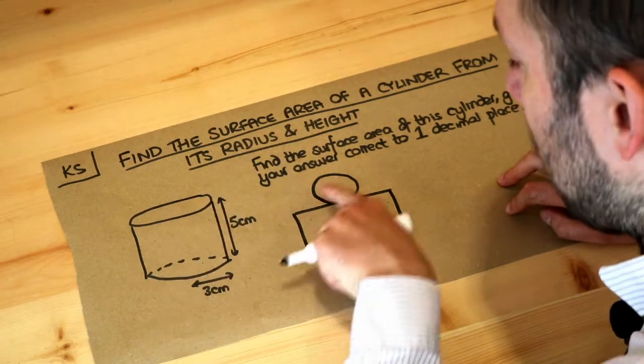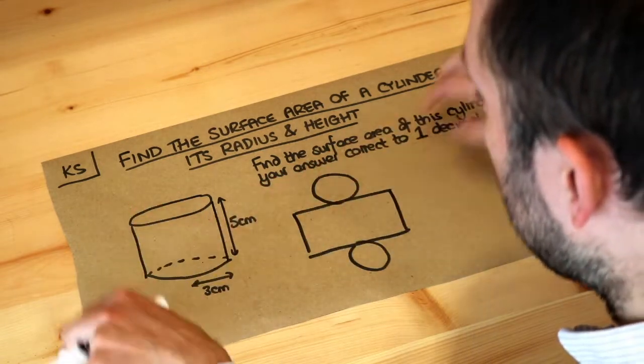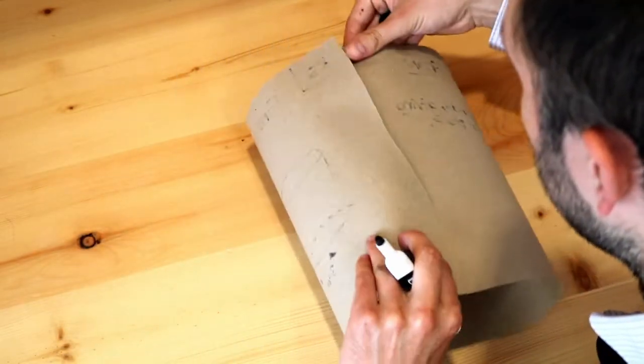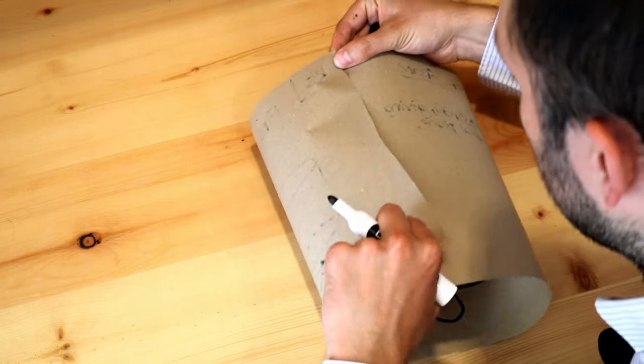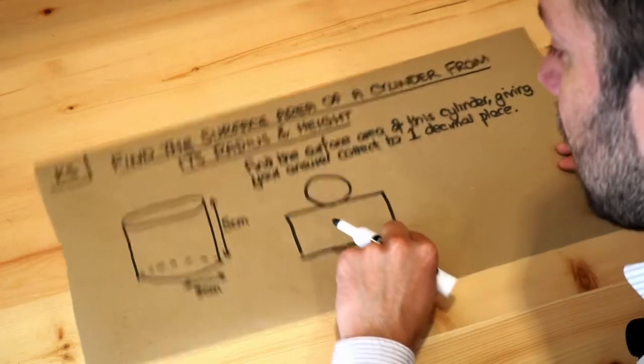So you've got the circle top and bottom, and then if you were to make a slit, so for example I took this piece of paper with a cylinder and I made a slit and I folded it out, that becomes a rectangle doesn't it?